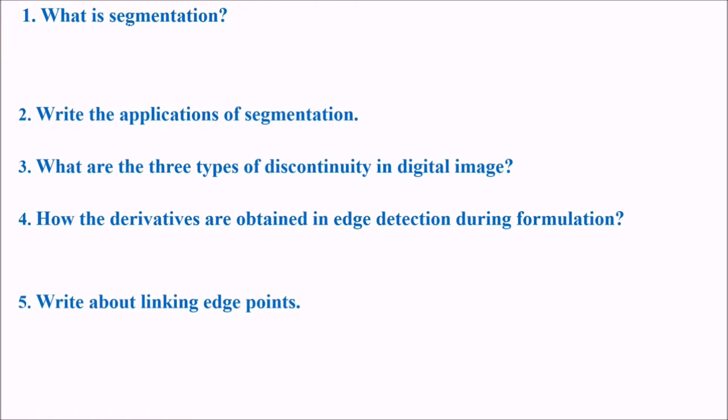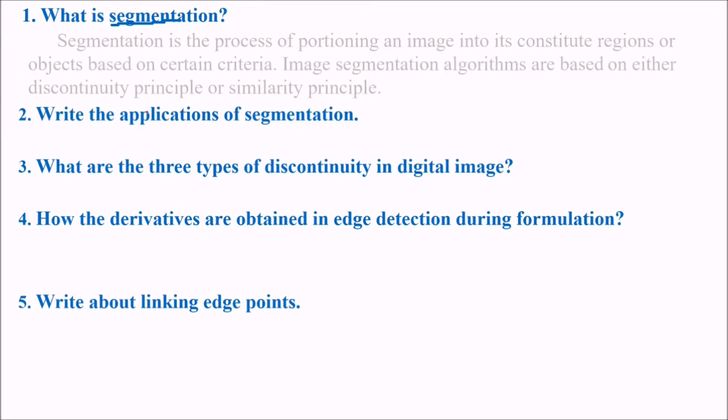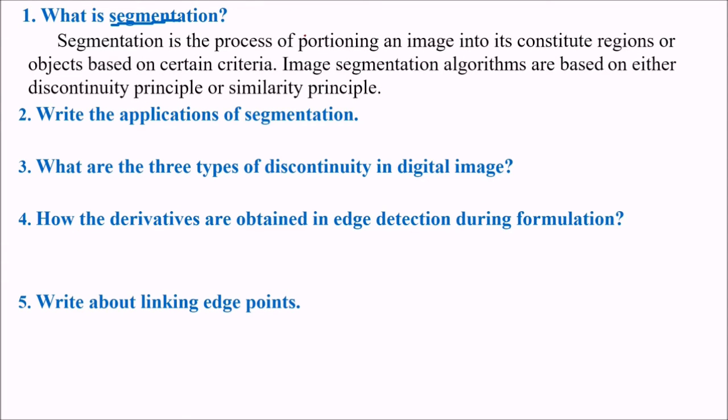What is segmentation? Segmentation has come from segments. So segmentation means you are trying to divide or categorize your image into different segments. The process is segmentation. Segmentation is the process of partitioning an image into its constituting regions or object based on certain criteria. This criteria is important. Image segmentation algorithms are based on either discontinuity principles or similarity principle.